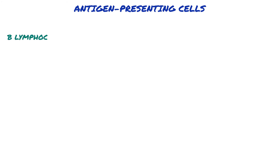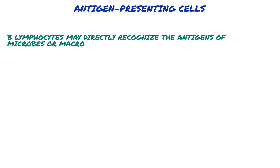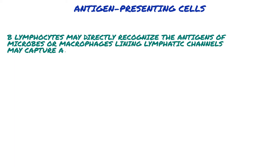Less is known about cells that may capture antigens for display to B lymphocytes. B lymphocytes may directly recognise the antigens of microbes, or macrophages lining lymphatic channels may capture antigens and display them to B cells. A type of cell called the follicular dendritic cell, or FDC,